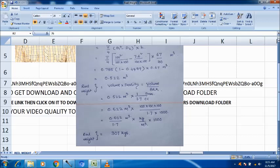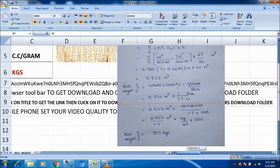Similarly, because gram is in numerator, to convert gram into kg, gram by 1000 is equal to kg. So, 0.522 divided by 1.7, 307 kg, it has come. Reel weight.